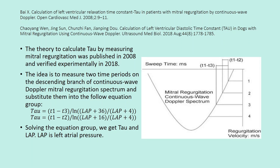The equation group is: TAU = (T1 − T3) / ln((LAP + 36) / (LAP + 4)), and TAU = (T1 − T2) / ln((LAP + 16) / (LAP + 4)). Solving the equation group, we get tau and LAP, where LAP is left atrial pressure.